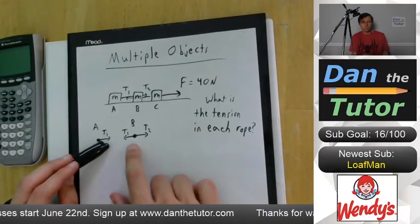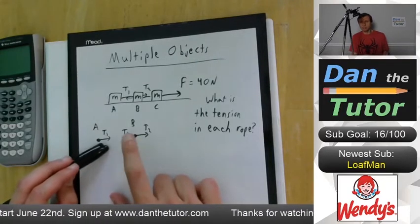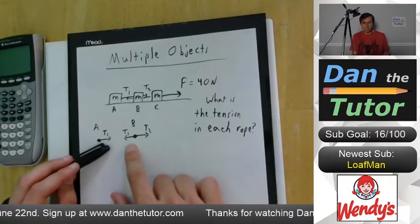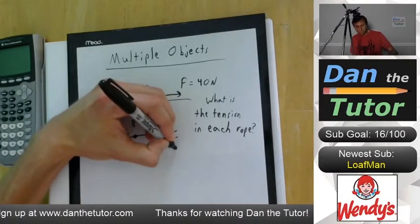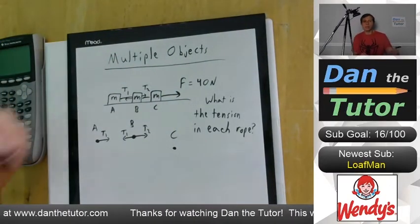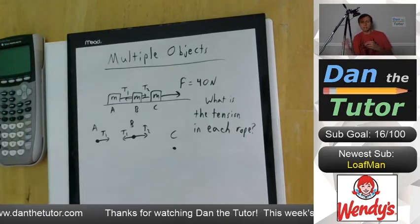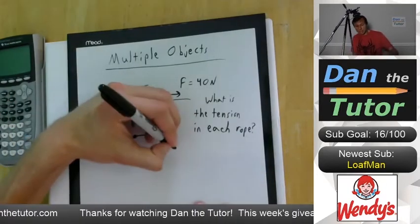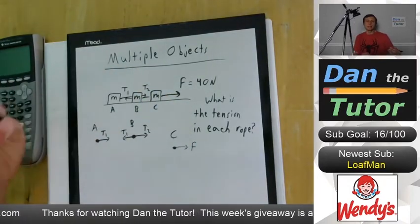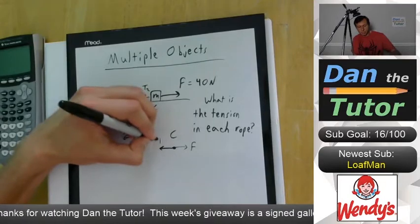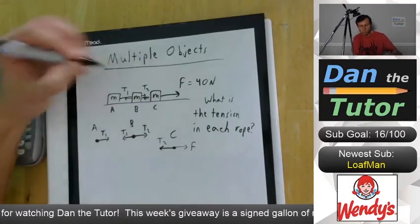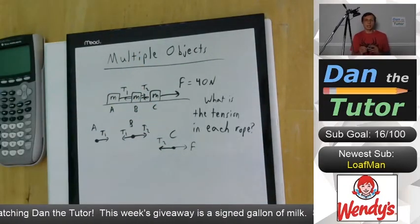And those two forces, you can think of them as Newton's third law pair of forces. And then we have box C. And once again, for box C, we have a force to the right. This time, the force to the right is F, that 40 Newton force. And the force to the left is going to be T2, because that, once again, is a Newton's third law pair force. So now we have our free body diagrams.